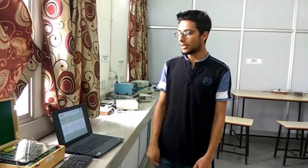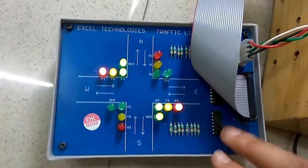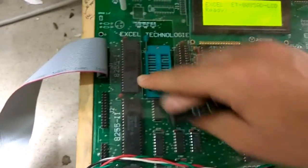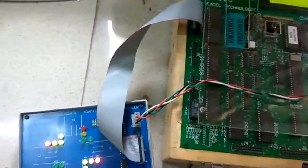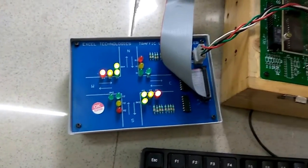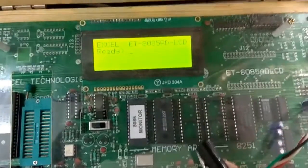Now, coming to the apparatus, this is the traffic light controller interfacing module which is connected to the 8255 peripheral interface using this FRC cable. This is the power supply given to the interfacing module. This is the 8085 microprocessor kit.